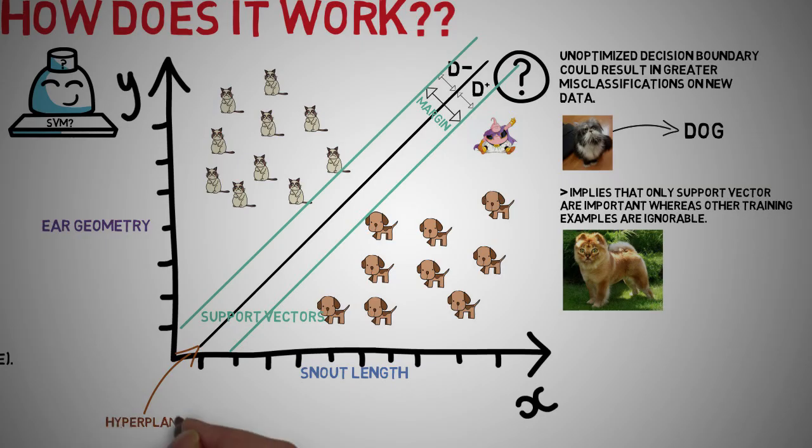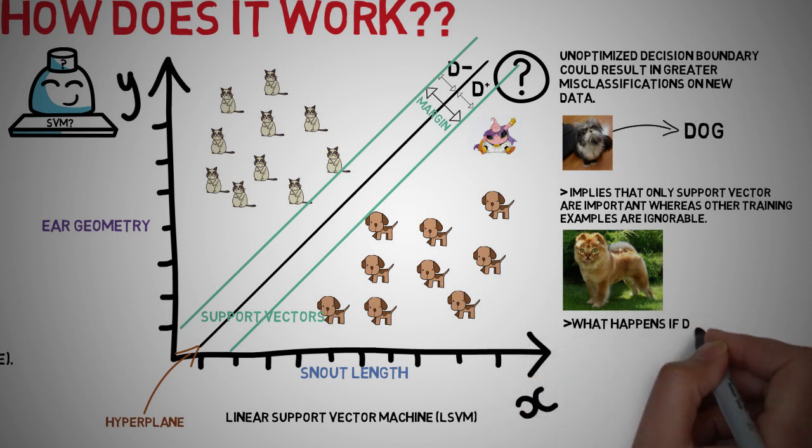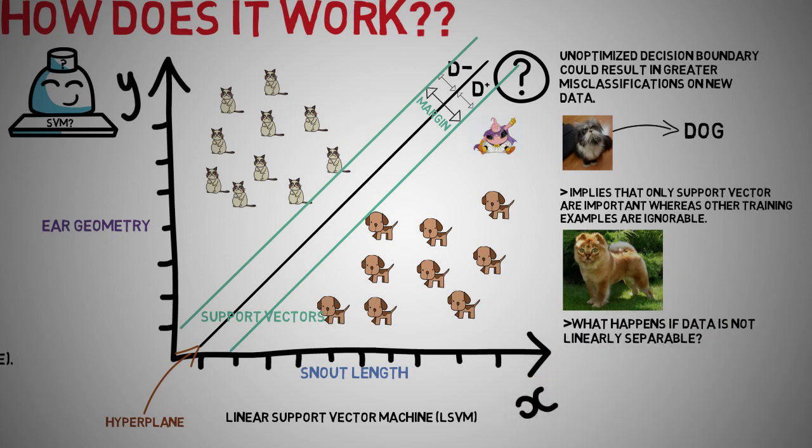The line or decision boundary that segregates the two classes is commonly referred to as a hyperplane because SVMs can be used in multi-dimensional data sets, and the data points are referred to as vectors as they have coordinates within the space of data. So what we discussed so far is also known as linear support vector machines or LSVM because the classes are linearly separable.